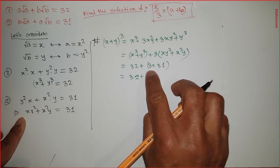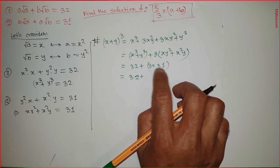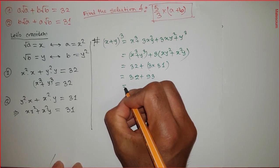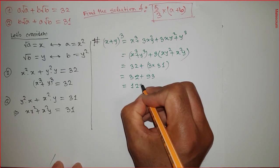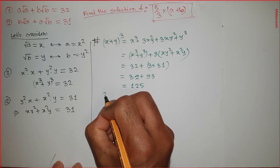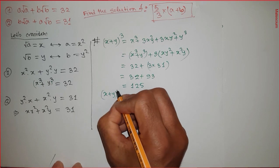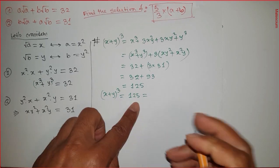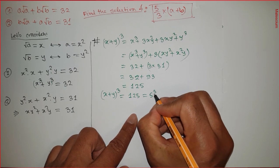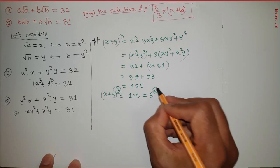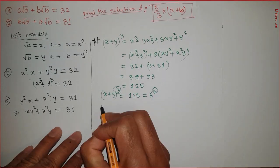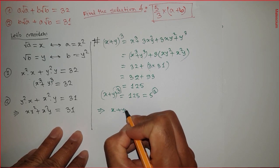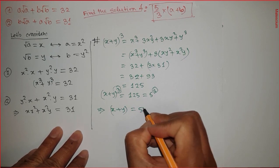So we get 32 + 3 times 31, which is 32 + 93 = 125. That means (x + y)³ = 125 = 5³. The cubes cancel from both sides, giving us x + y = 5.